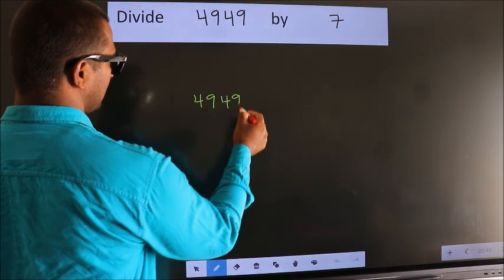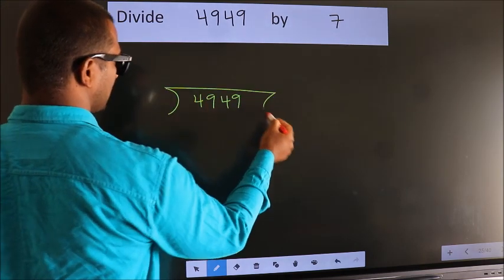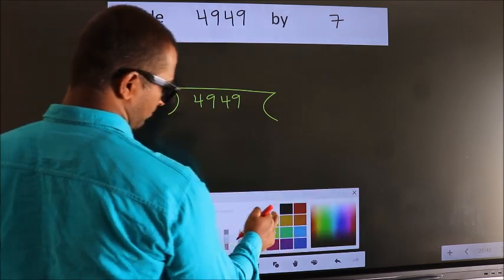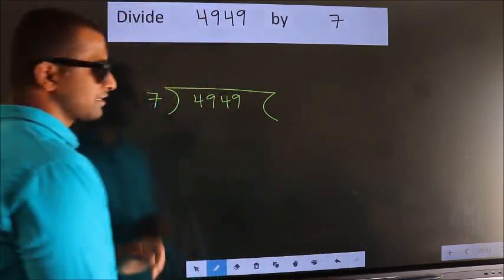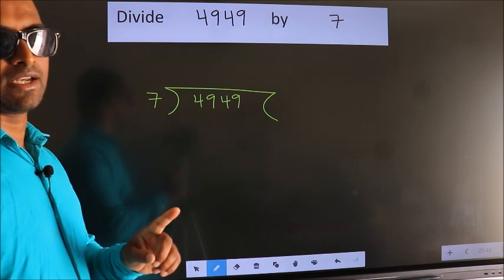4949 here, 7 here. This is your step 1. Next.